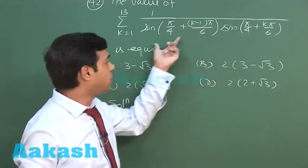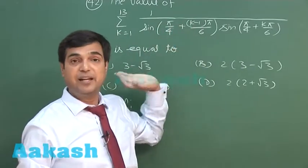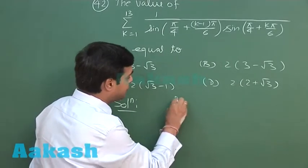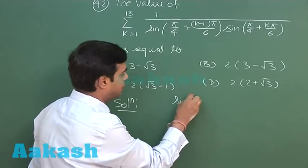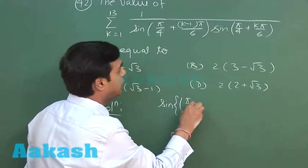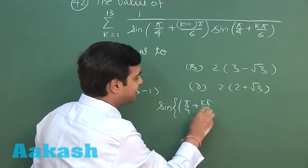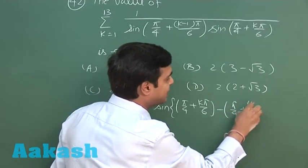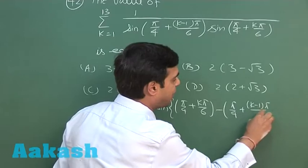For each term would be coming out constant, so we can multiply and divide by that difference. So we can check here, here sin(π/4 + kπ/6) minus (π/4 + (k-1)π/6), divided by the same two terms sin(π/4 + (k-1)π/6).